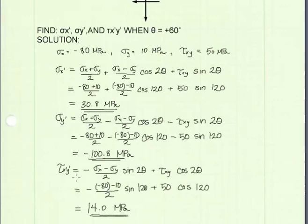The next step is to find the equation for tau x prime y prime. This equation will take the stresses on the original element, and once it is rotated through an angle theta, will give us the values for shear stress on the rotated element. Substituting in values for sigma x, sigma y, and tau xy from above, we get a value of 14.0 megapascals. These three stresses are the stresses on the rotated element.